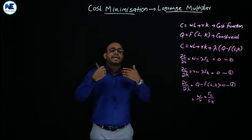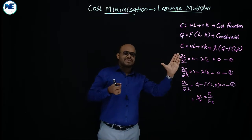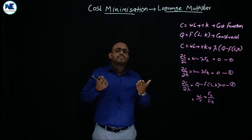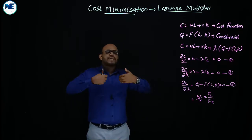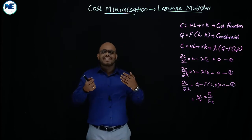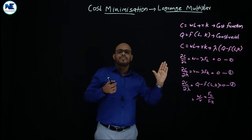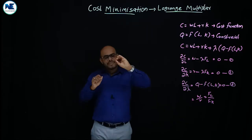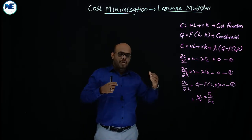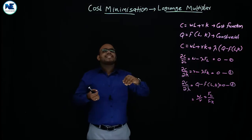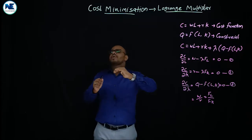What is the aim of a producer, firm, or seller? The answer is profit maximization. Profit is total revenue minus total cost. To maximize profit, the firm should produce under the least cost combination of inputs — that is, cost minimization. So we can simply say the goal of the firm is either cost minimization or profit maximization. Our objective function here is related to cost minimization.